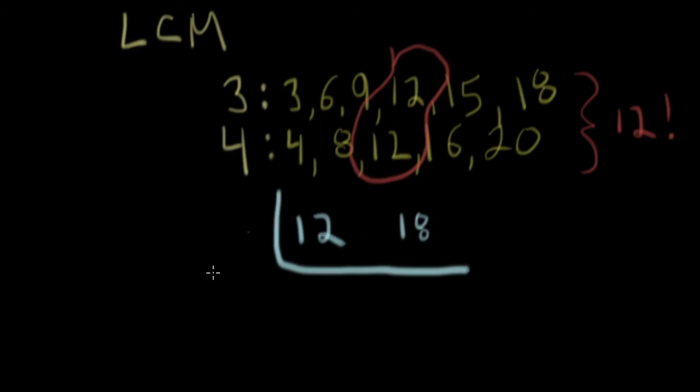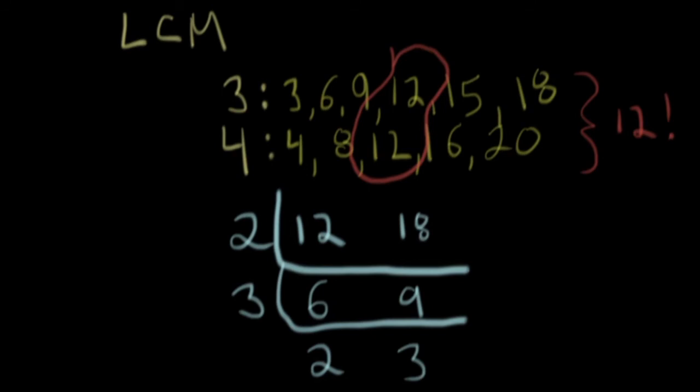That can go into 12 and 18, and that's going to be two. That leaves you with six and nine. And is there any other number that can go into six and nine? Yes, there's three. And if you divide that, you get two and you have three there. And then you stop. Now remember back to the GCF lesson, you would go and just multiply two and three. There you go.